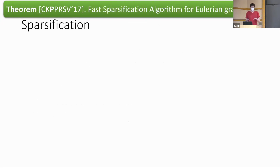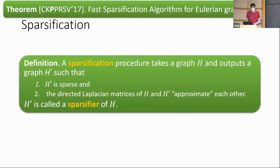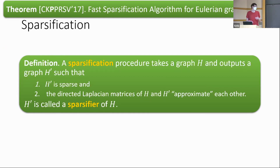I'm now going to spend most of the remaining talk on sparsification, which is an important tool used in the Eulerian Laplacian system solver. A sparsification procedure takes a graph H and outputs a graph H prime such that H prime is sparse, and the directed Laplacian matrices of H and H prime approximate each other in an appropriate linear algebraic sense. We call H prime a sparsifier of H. If you're familiar with the Loewner ordering for symmetric matrices, this corresponds roughly to saying that matrices approximate each other within a constant factor under the Loewner ordering.